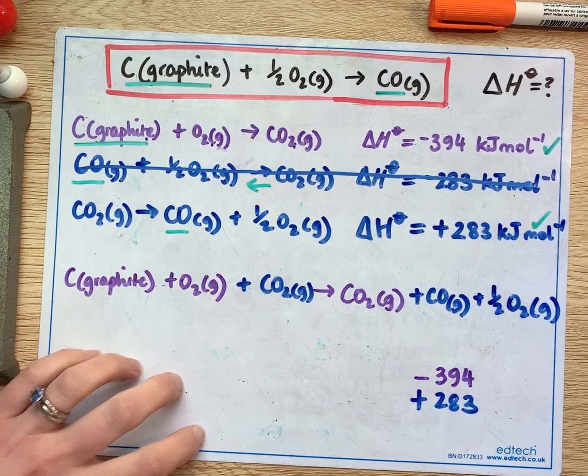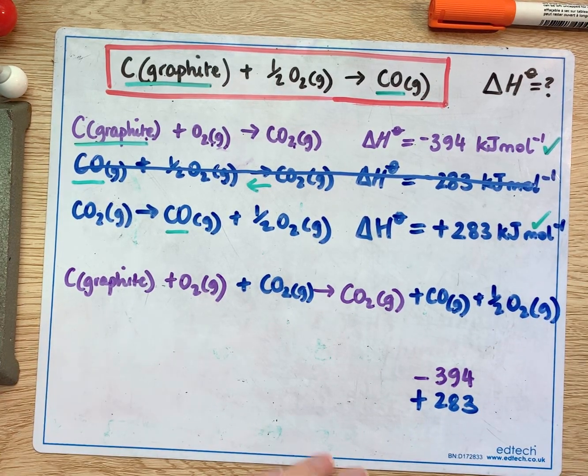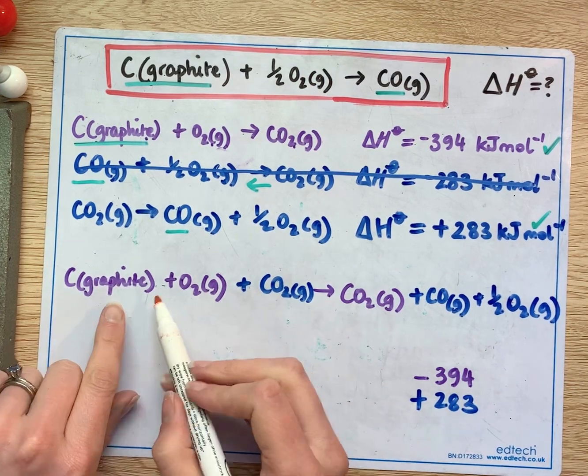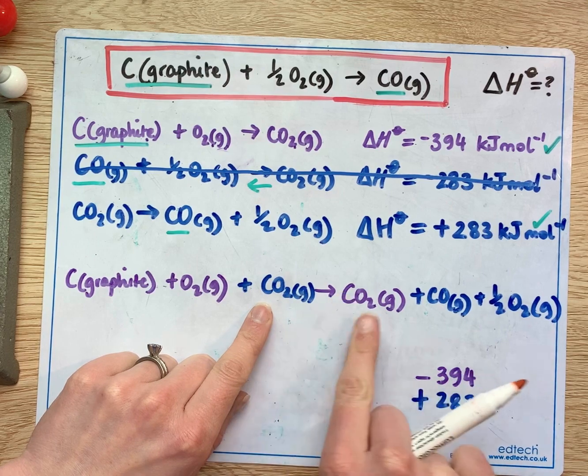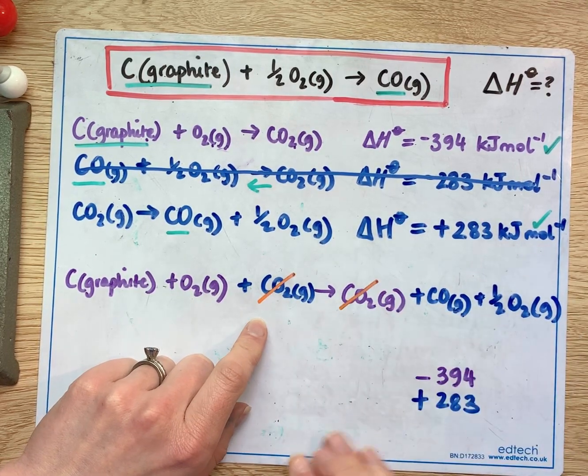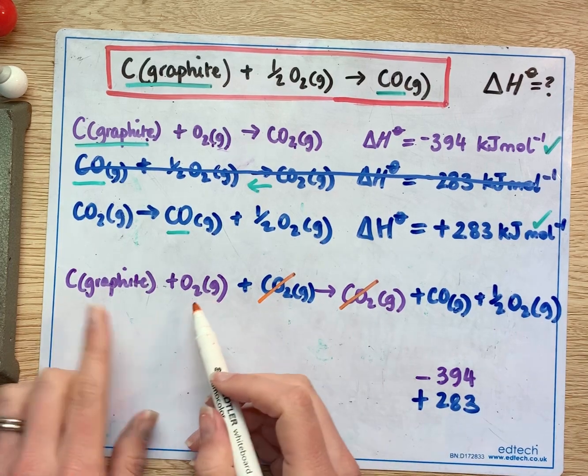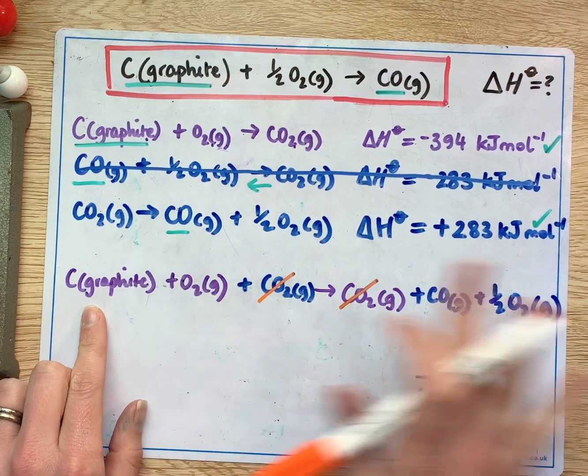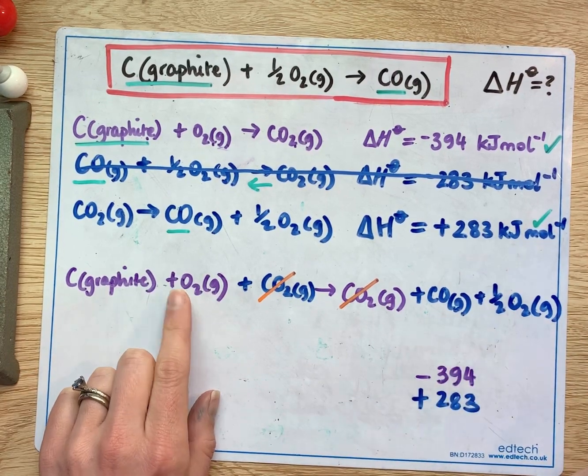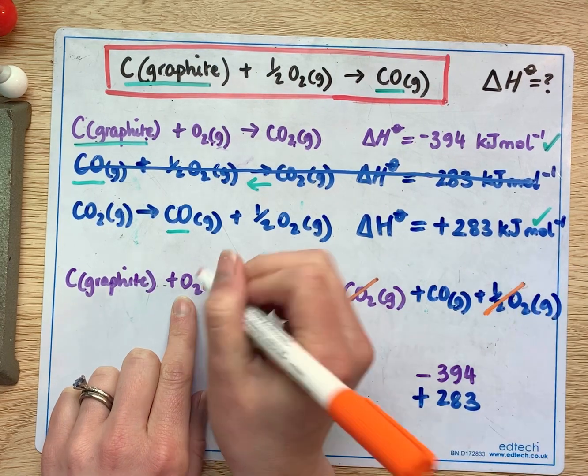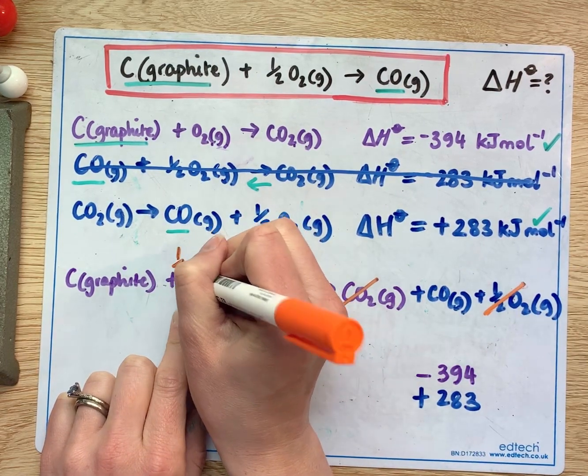Now I'm gonna have a look and see if I can cancel anything out. So here I've got carbon dioxide reactant side and on the other side products, one carbon dioxide, one carbon dioxide. Graphite stays the same, carbon monoxide can't cancel. Oxygen I have one mole and I have half a mole. Well I can take half a mole away here and take half a mole from one to leave half.